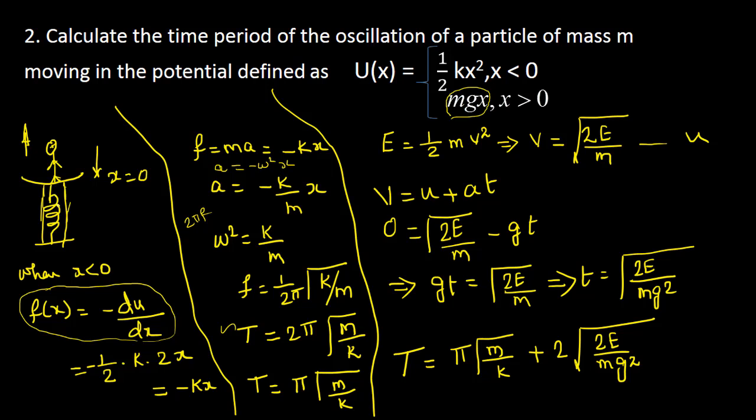So T = 2π√(m/k) for a full oscillation in the spring region. The contribution from the spring side to the total time period is half of this: T_spring_half = π√(m/k).